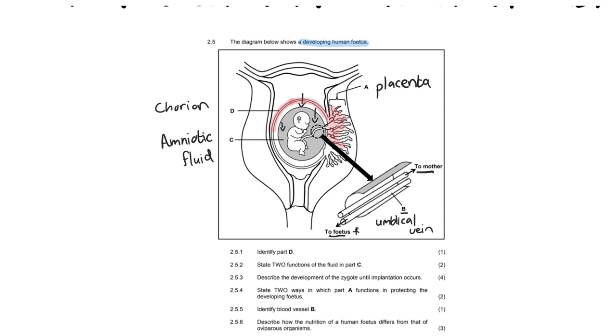Okay, so we've done our labelling. Let's go on to our questions and unpack those. First things first, 2.5.1, it says identify part D, which we've already done. So that means we're quickly going to answer that. Whoops, let's just change my spelling there. Chorion.